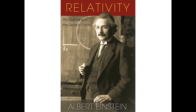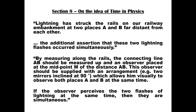In section eight of his book he describes the thought experiment in a meticulous manner. Lightning has struck the rails on our railway embankment at two places, A and B, far distant from each other. He then makes the additional assertion that these two lightning flashes occurred simultaneously. By measuring along the rails, the connecting line A-B should be measured up and an observer placed at the midpoint M of the distance A-B.